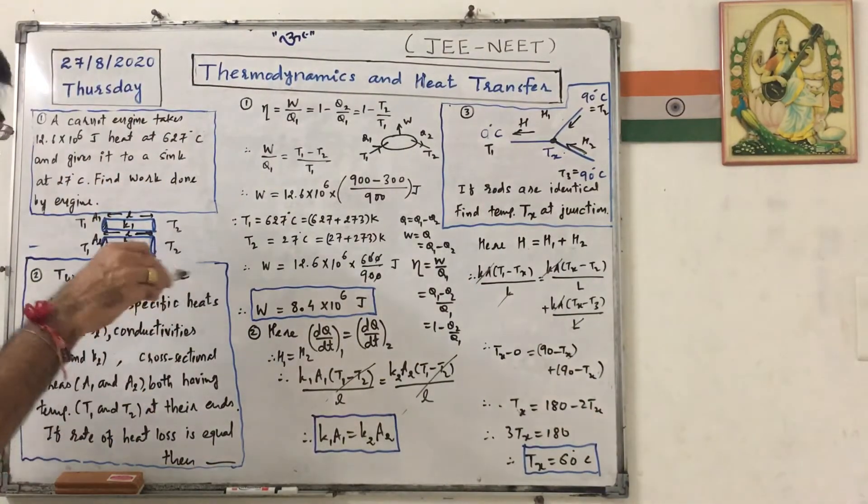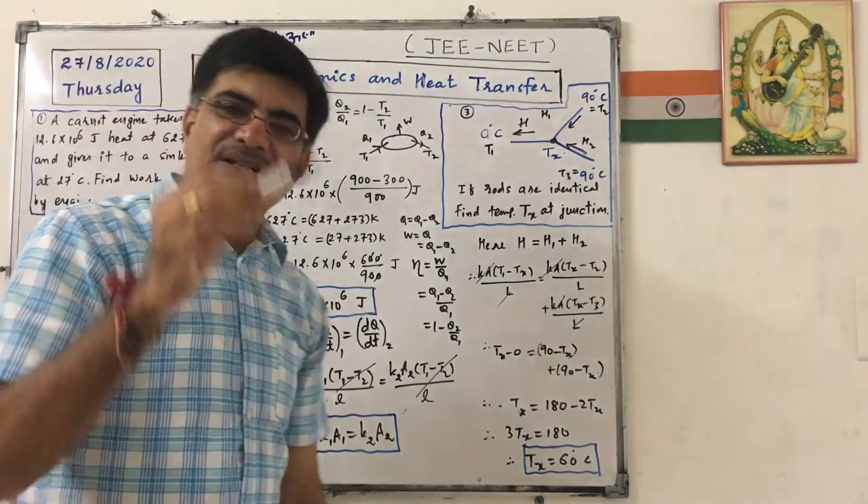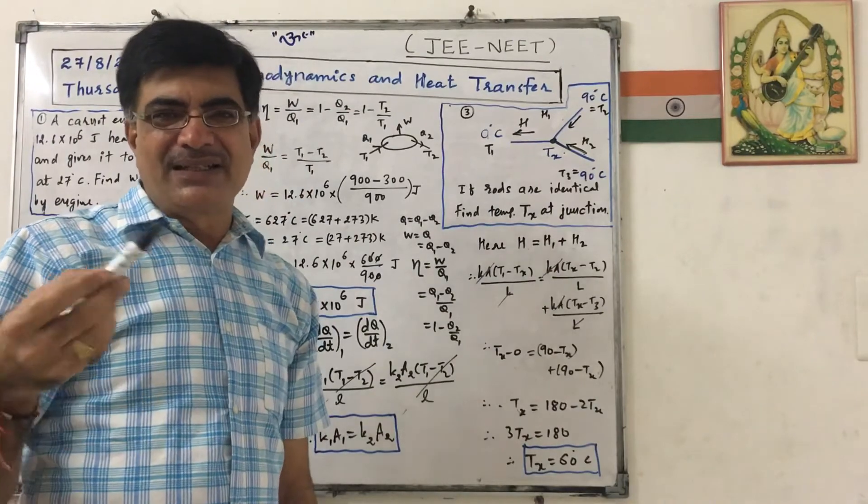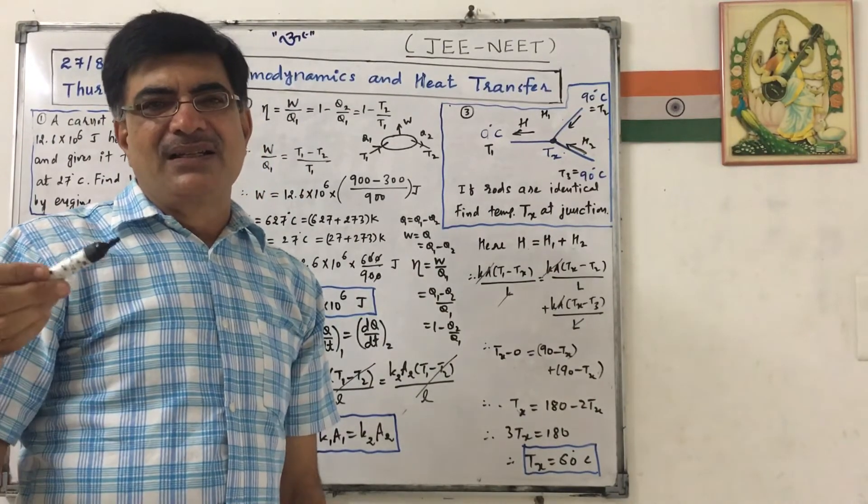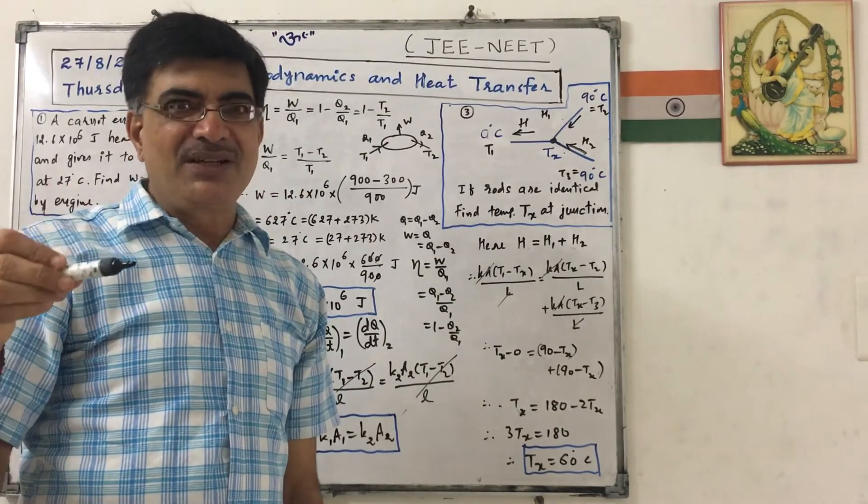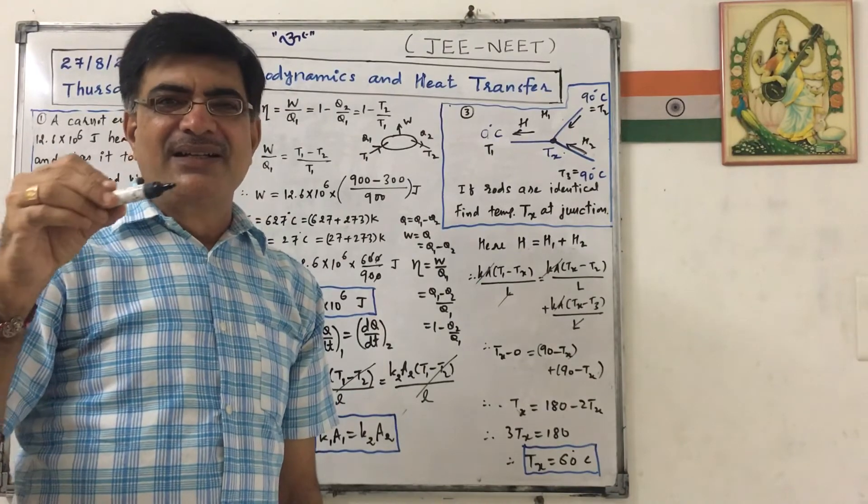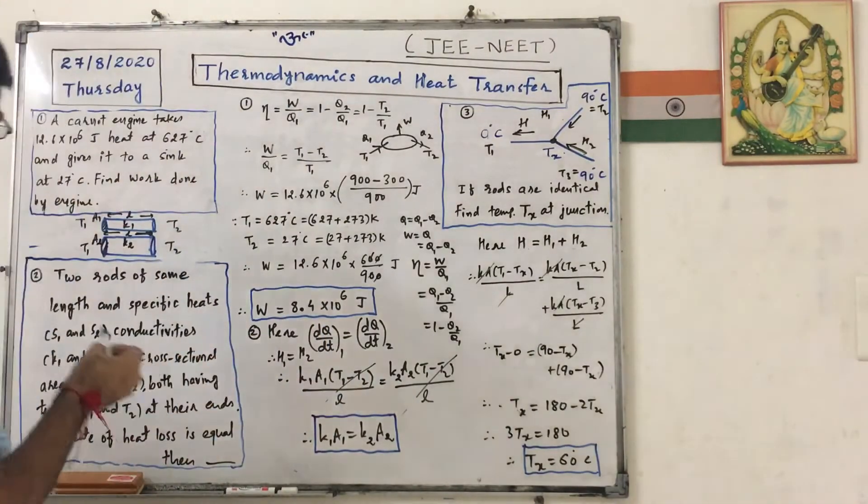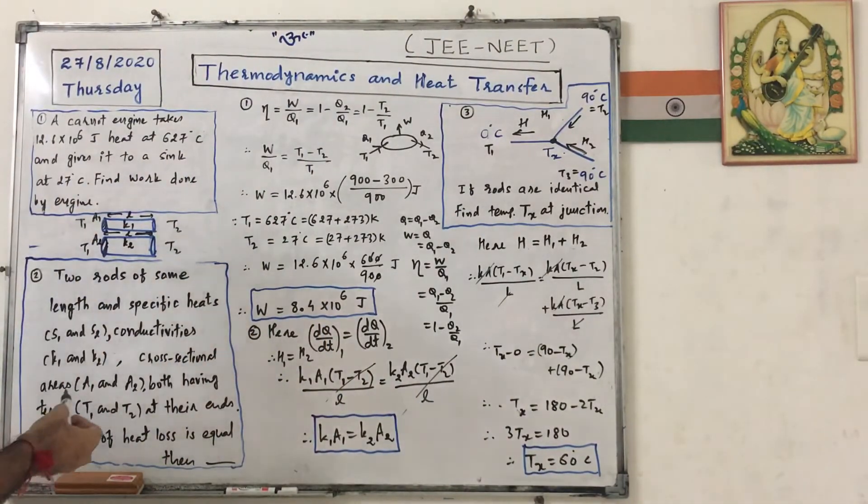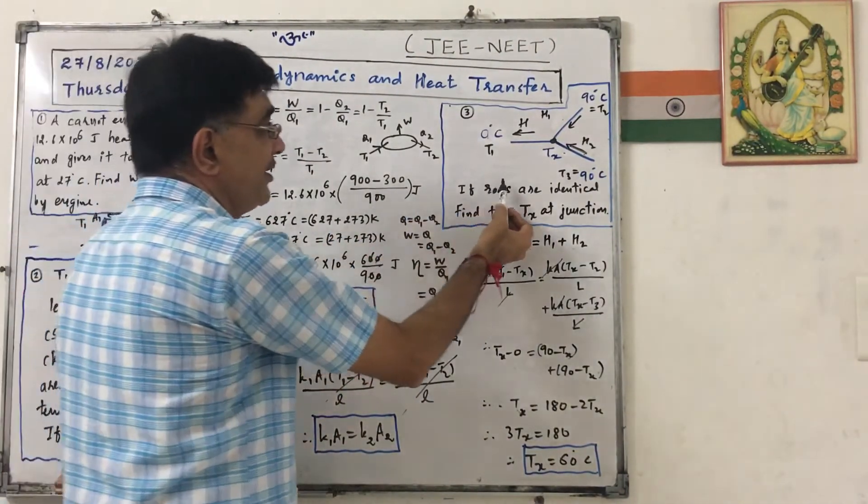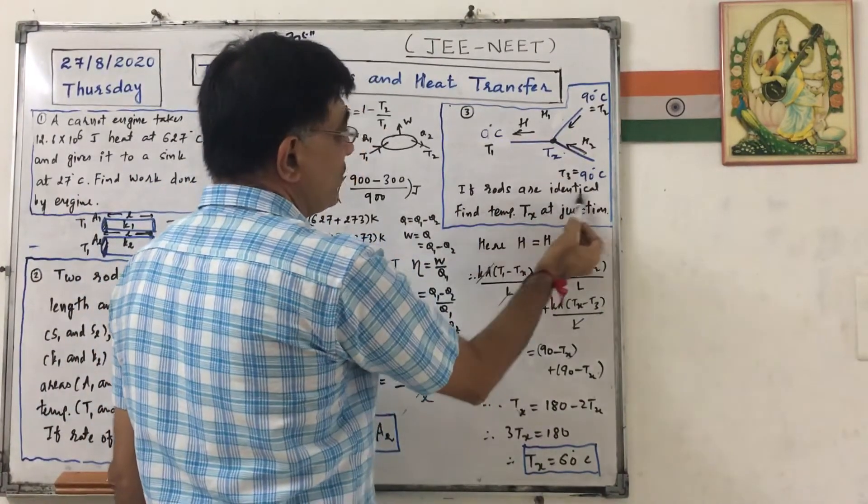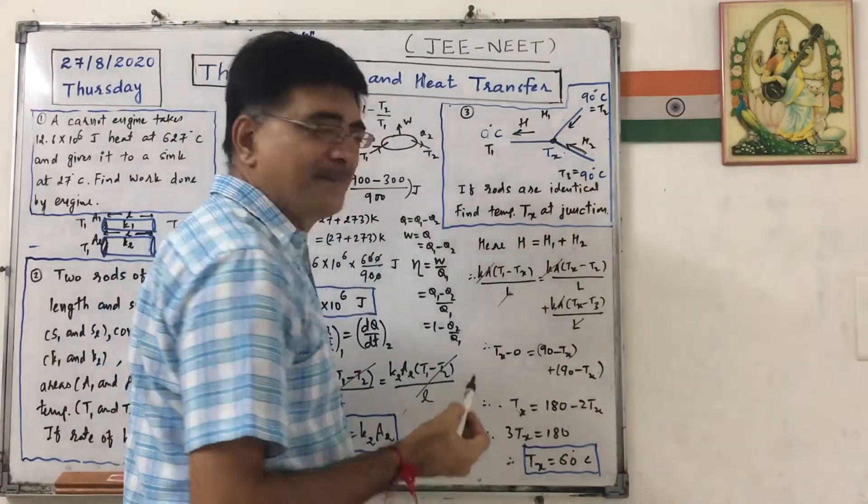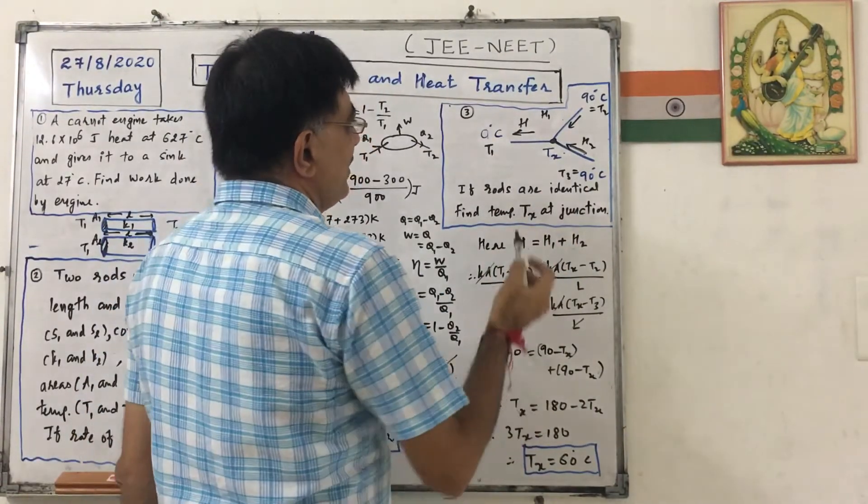All three problems were asked sometimes, either in NEET or in JEE. As I told you, at that time, these were known as PMT, AIPMT - All India pre-medical test - and AIEEE. So now this third one, figure is given. If rods are identical, two and three rods are identical, find temperature Tx at junction.